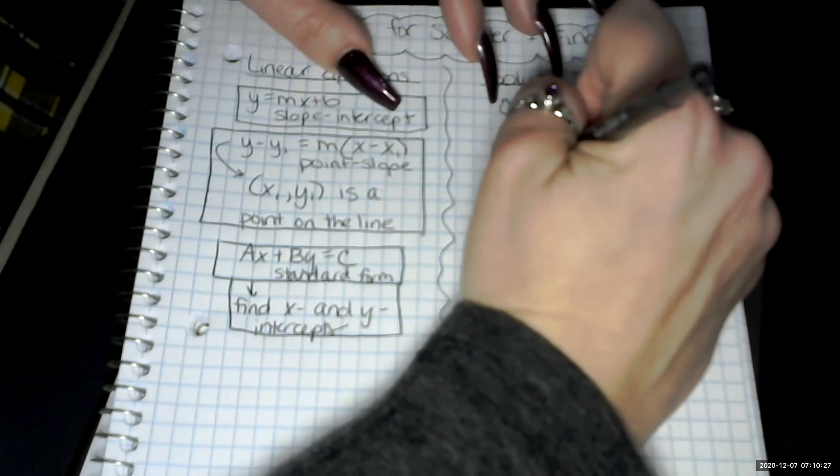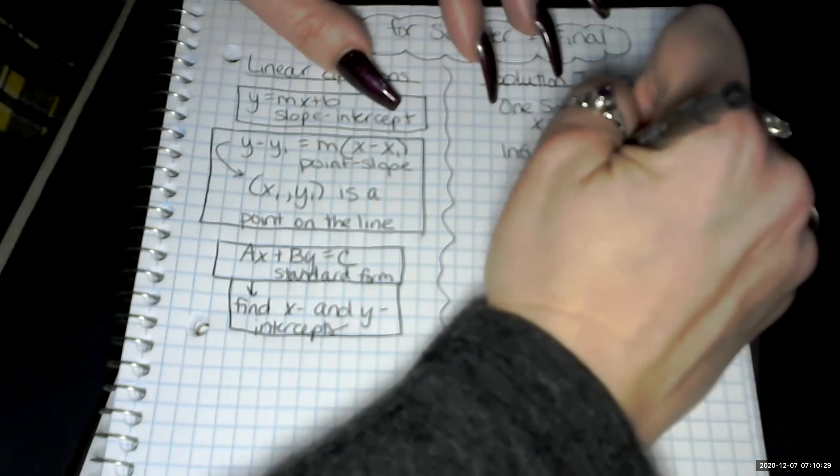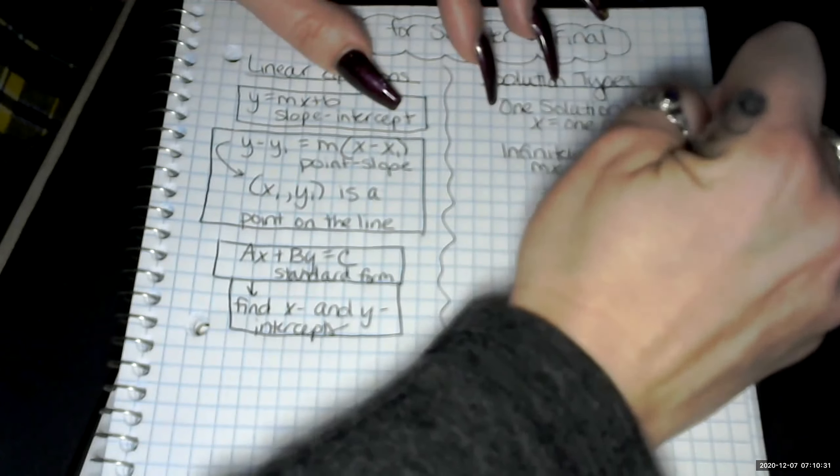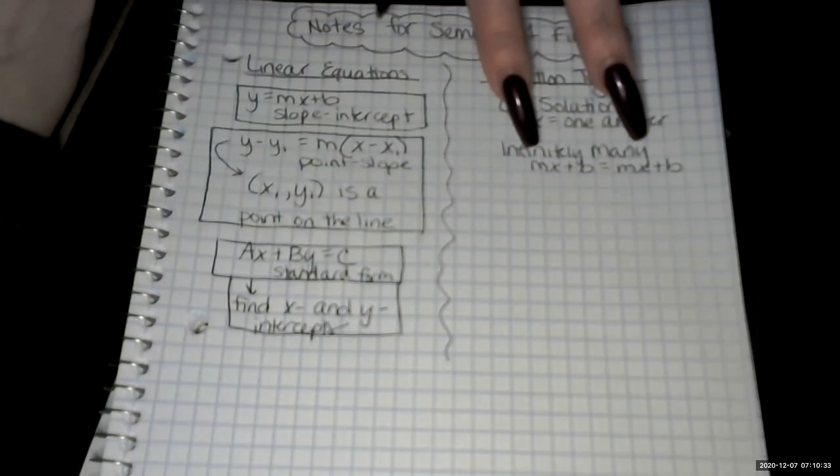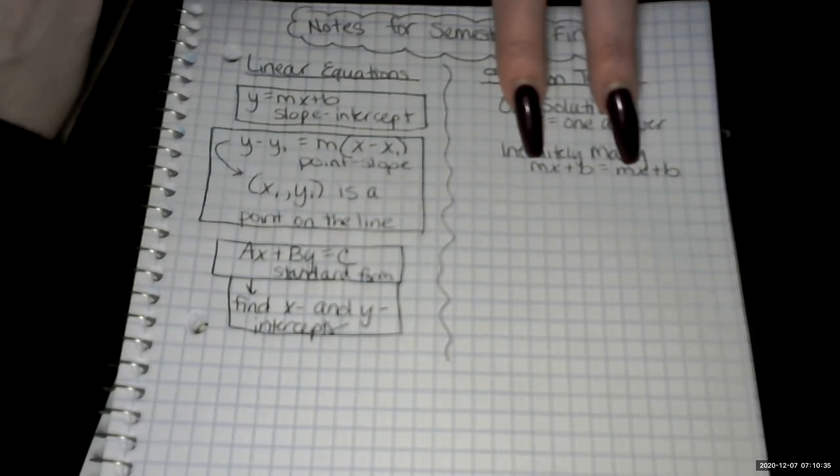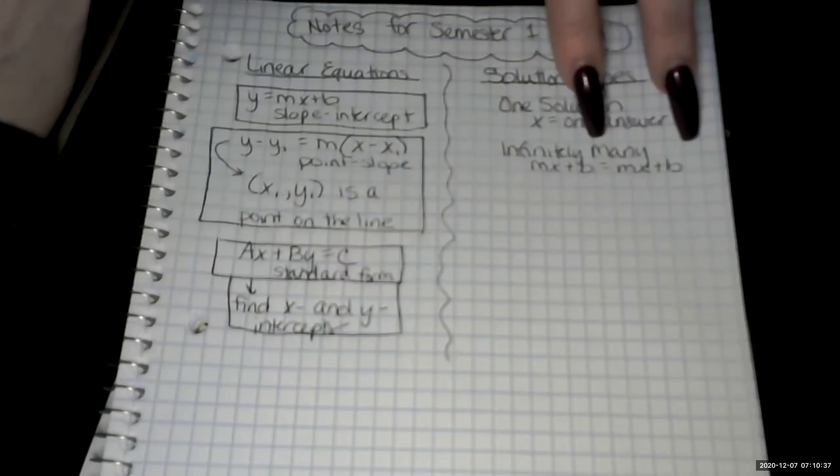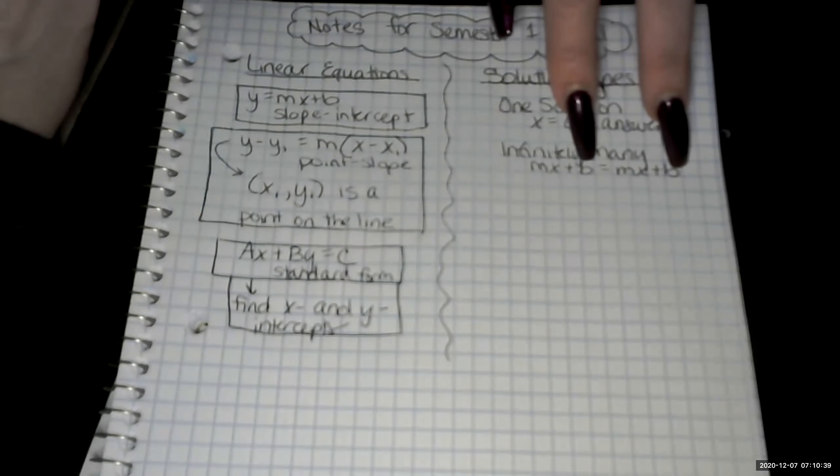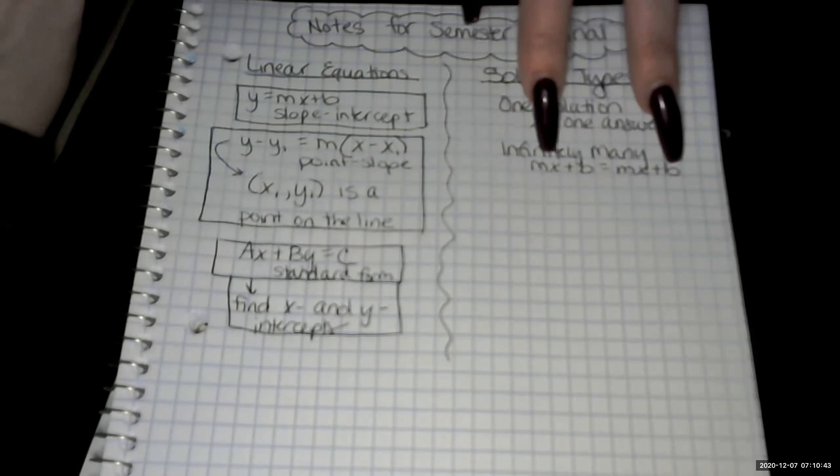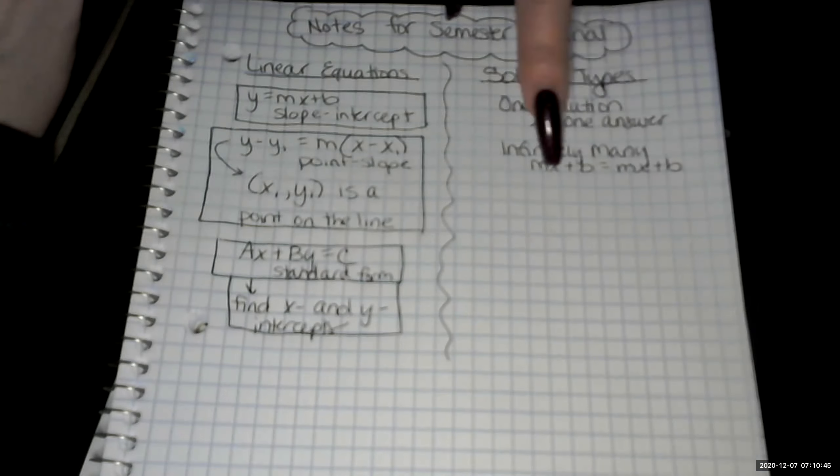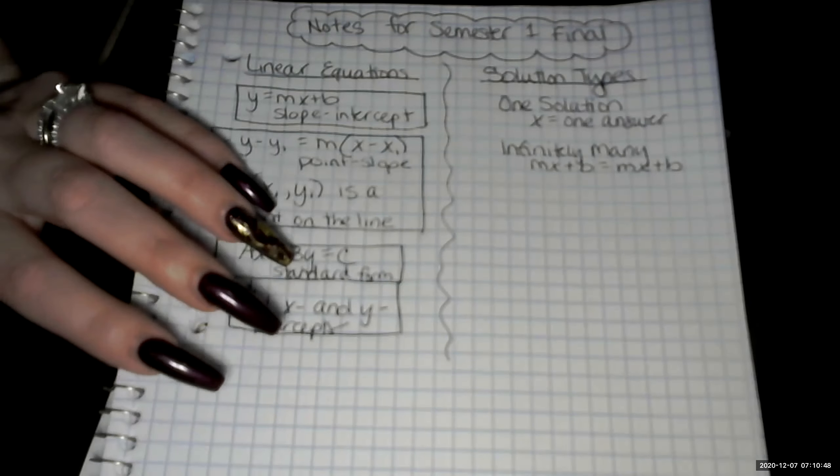What if we did mx plus b equals mx plus b. The reason I'm showing that is you notice the coefficients are the same. And you notice that the constant, the b is the same. And when you get it down like that, or just b equals b or mx equals mx, it's going to have infinitely many solutions.